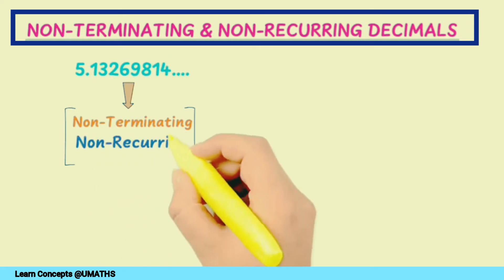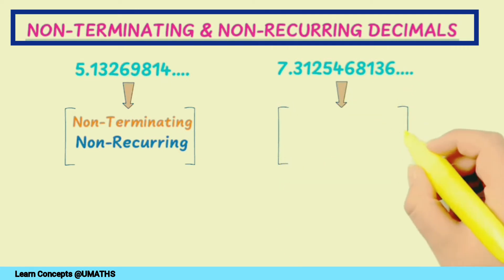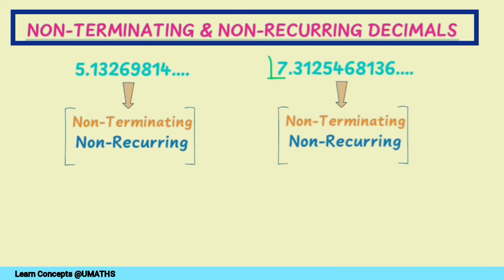The other example is 7.3125468136 and so on. Here again, the digits in the decimal part never end, and you will not find any pattern in these digits. Hence, it is non-terminating and non-recurring decimals.